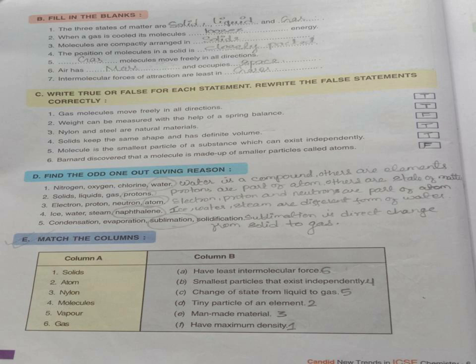Number 1, solid is number F, have maximum density. Number 2, atom, number D, tiny particle of an element. Number 3, nylon, number E, man-made material. Number 4, molecules, number B, smallest particles that can exist independently.